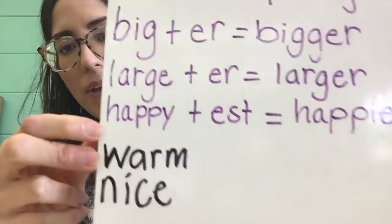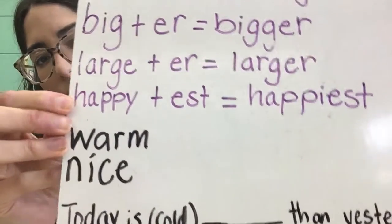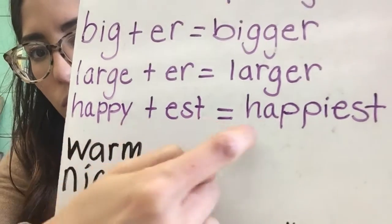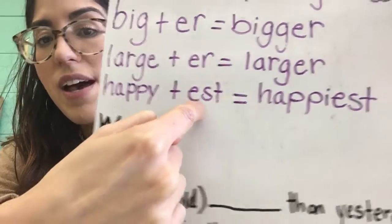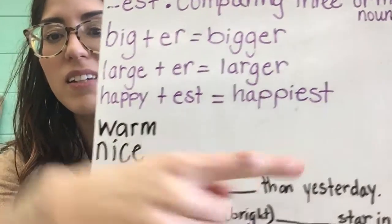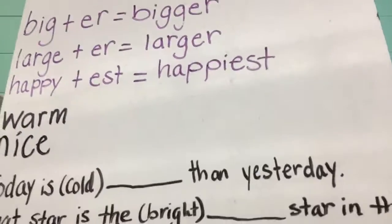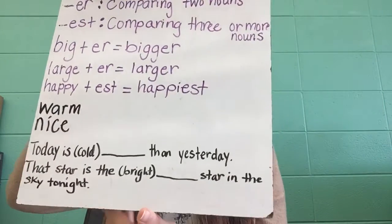The third rule: when a root word ends with a consonant and Y, you change the Y to an I before adding the suffix beginning with an E. For example, happy plus -est equals happiest — we change the Y to I and then add -est. Now for Think A: use the spelling rules to add each suffix to the adjective.